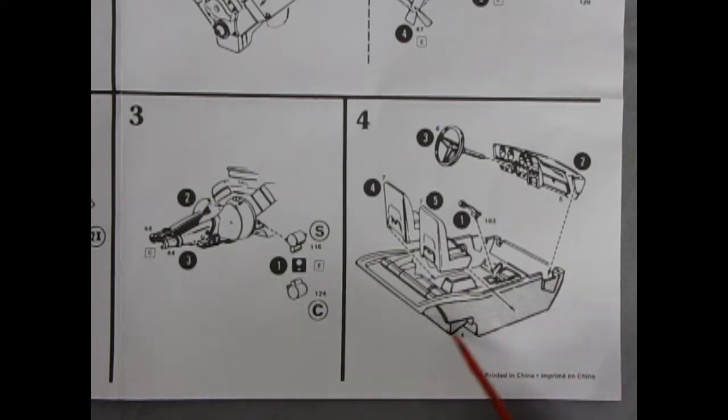Then if we go over to panel 4, we have our interior as a tub with a gear shift, the two front seats, the dashboard, and our steering wheel.